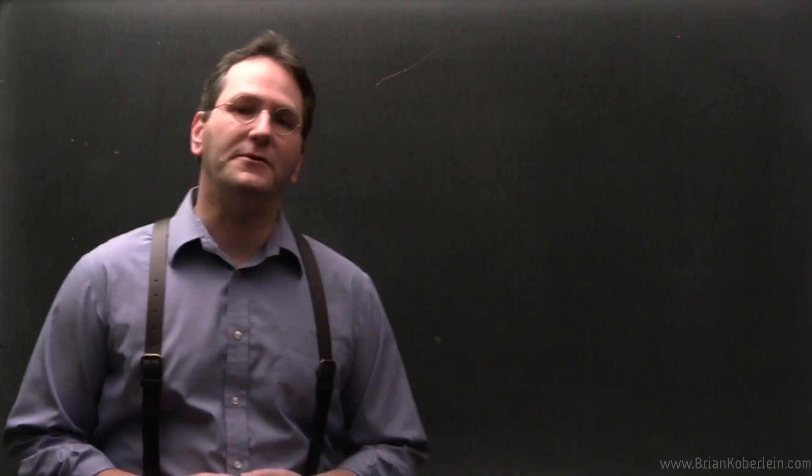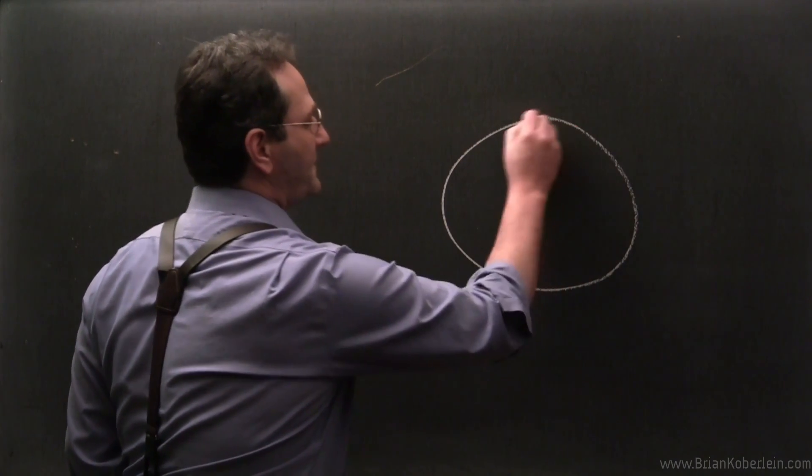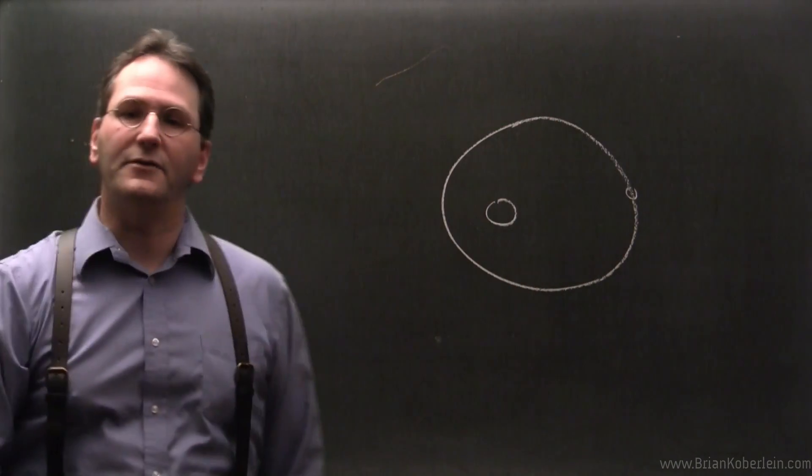It all starts in the 1850s when Urbain Le Verrier measured the orbit of Mercury very precisely. If you look at the orbit of Mercury, it's a little bit of an ellipse. So you have the Sun, you have Mercury moving around like that.